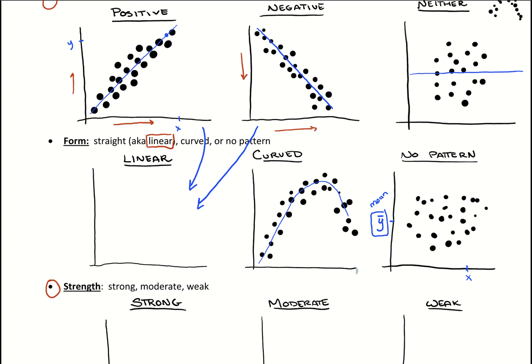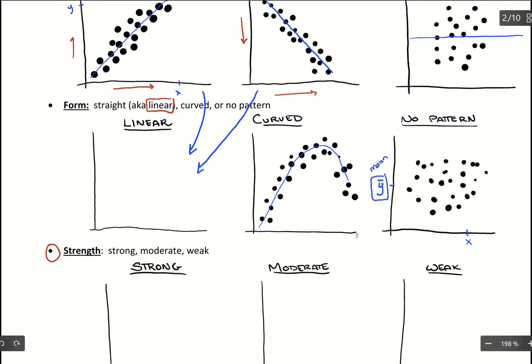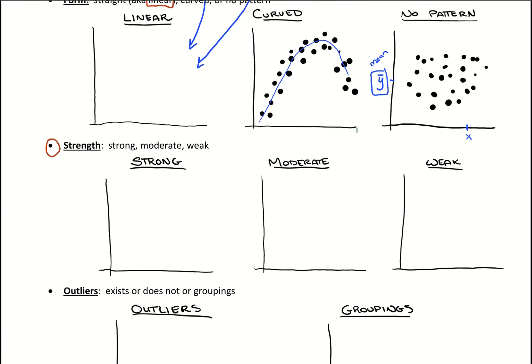So we want to check that form, and really that's to kind of check the condition that we have linear form for moving forward in our work. Then we could talk about strength. And strength can come down to how well we're fitting a line.